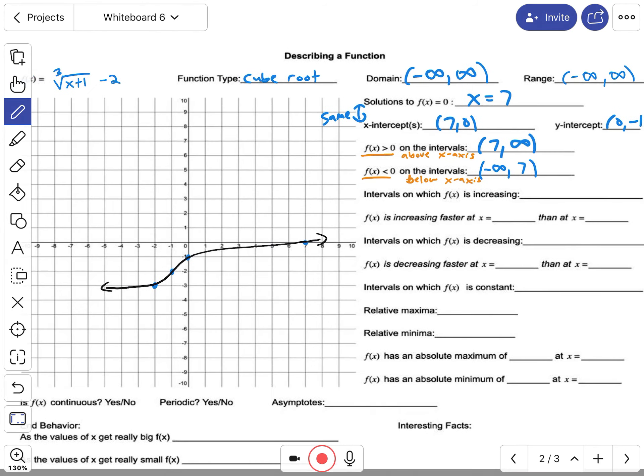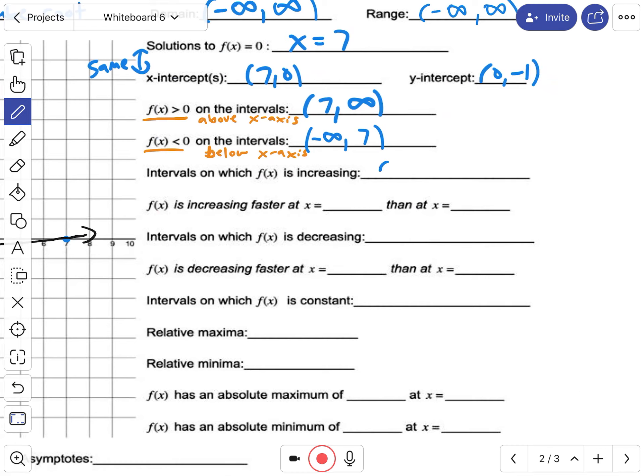Okay, increasing. Increasing means going up from left to right. So if I'm going left to right, it's going up the entire way. So where it's increasing is going to be left forever and right forever—this entire graph. You could even say all real numbers, but that just means the same thing.